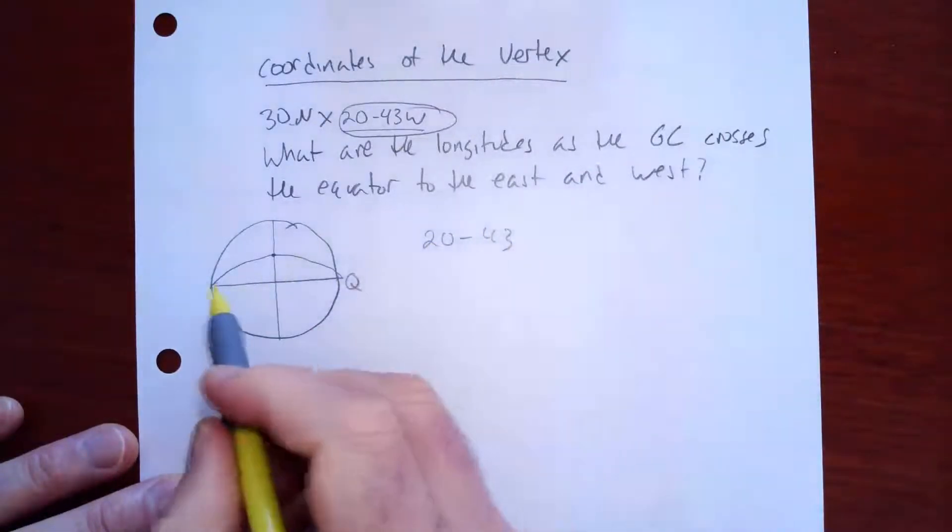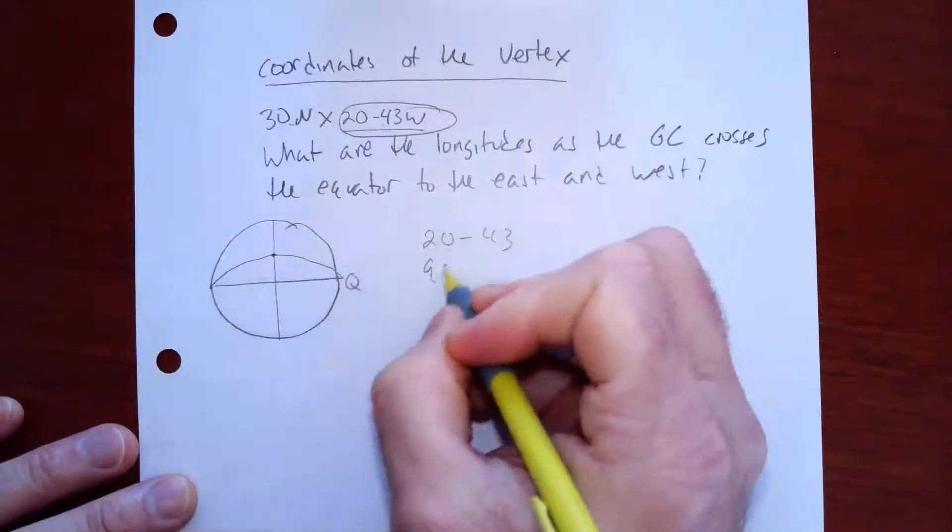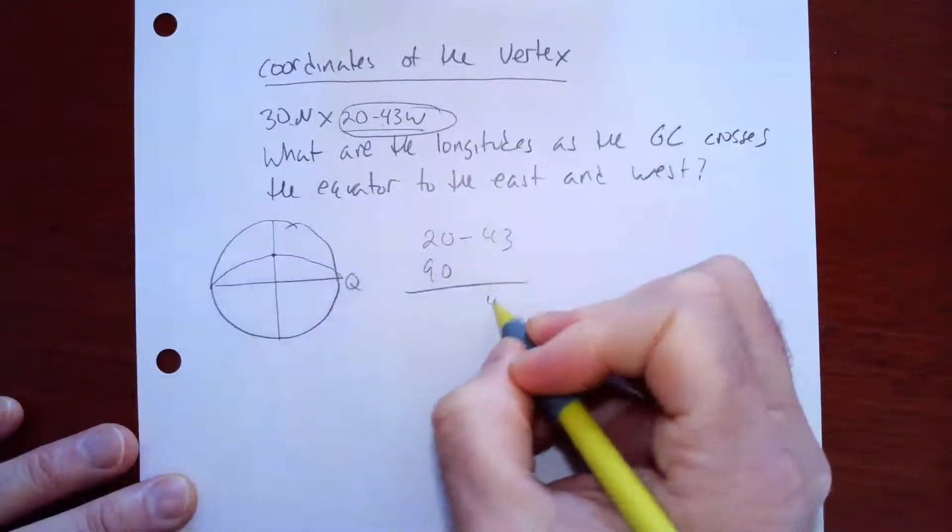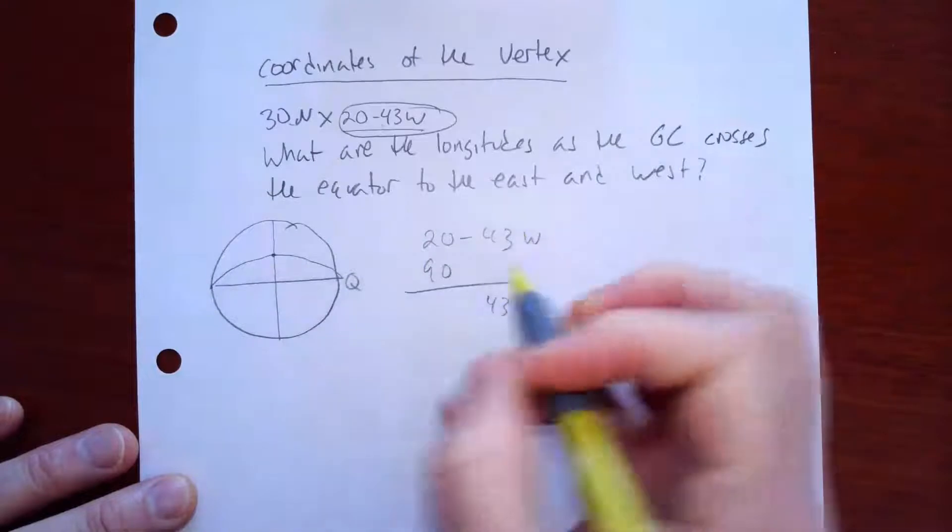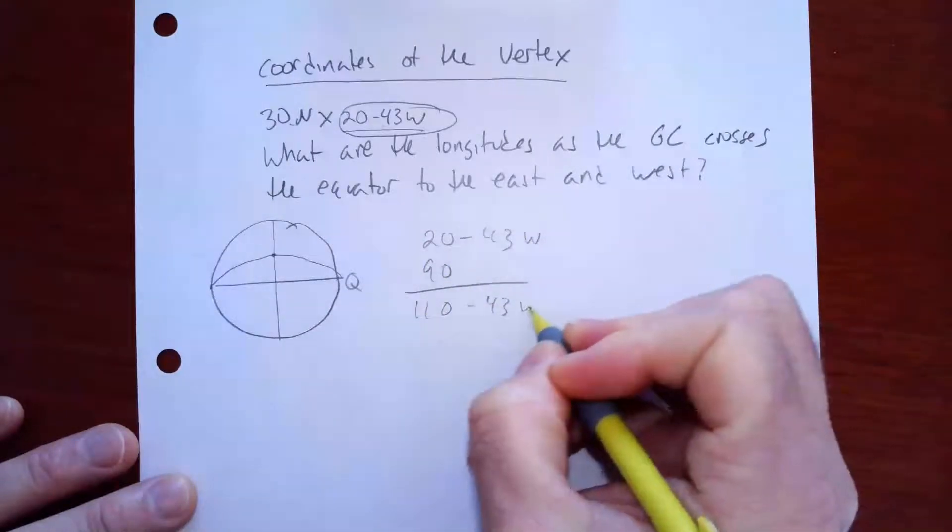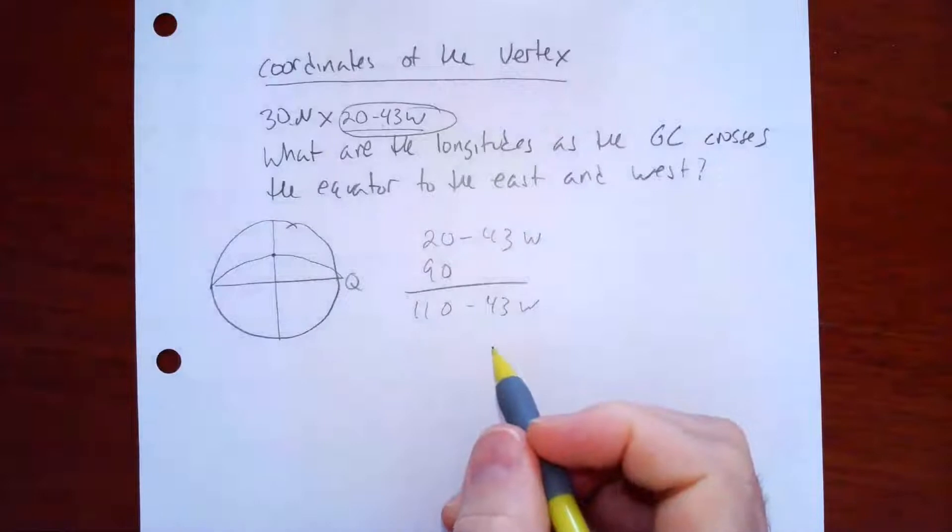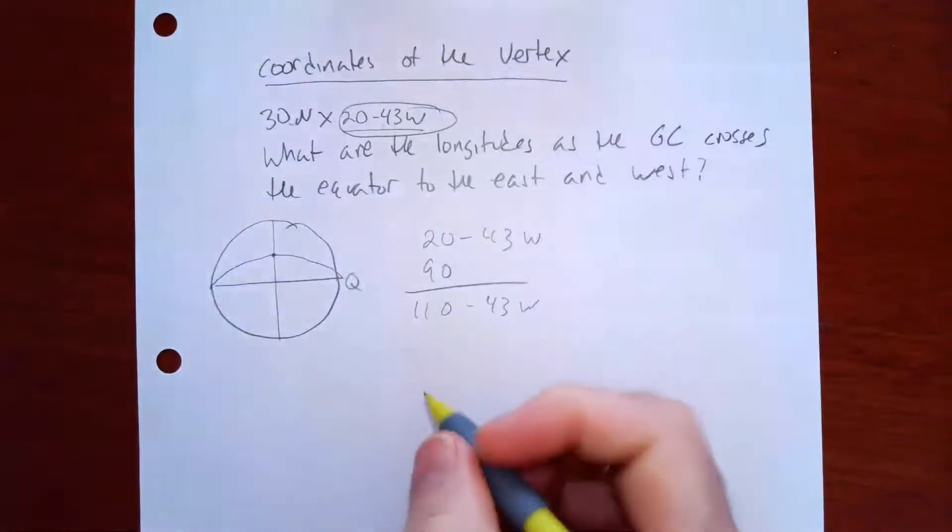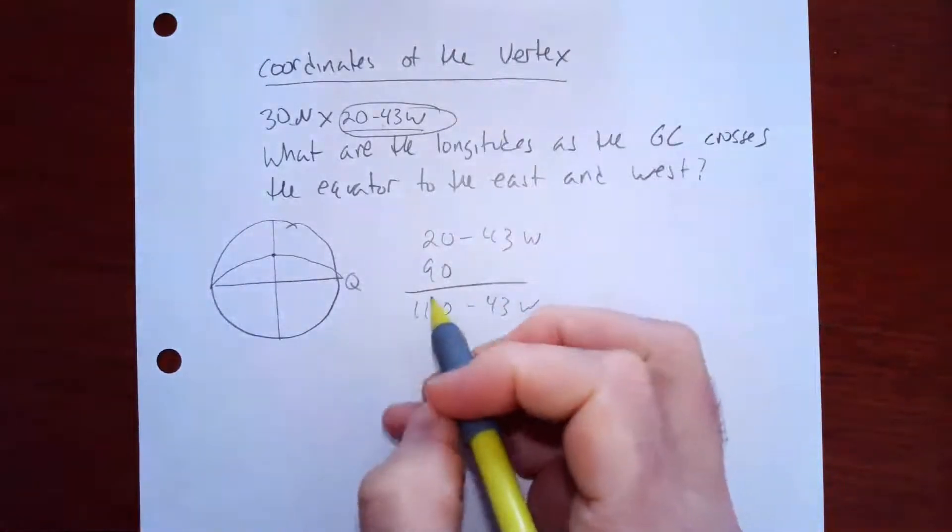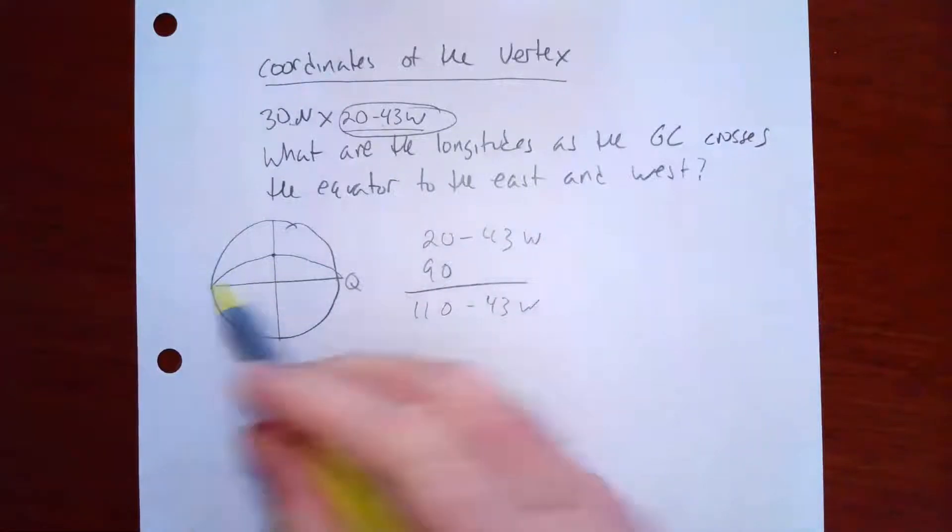20 43. What I'm going to do first is I'm going to calculate the western one. So I'm going to add 90 to there. So I get 43. This is 20 43 west. I'm going to add 90. So that's 0. That's 11. So the answer is 110 43 west. So that is the longitude as the great circle crosses the equator to the west.